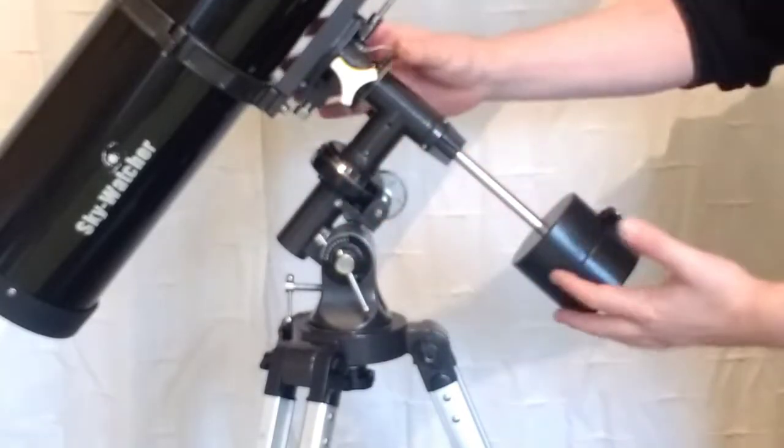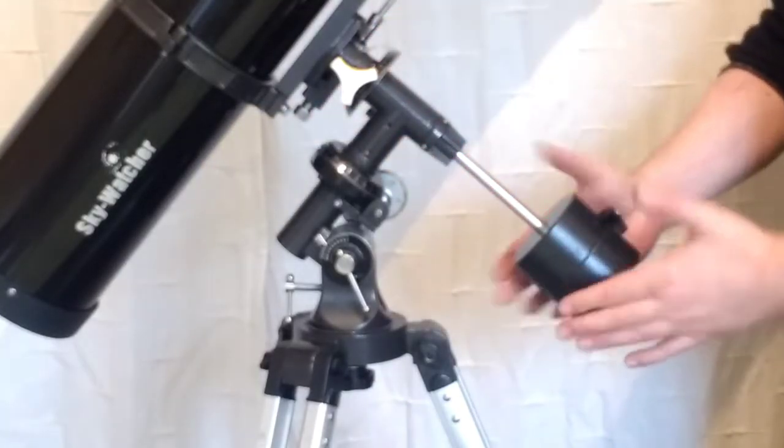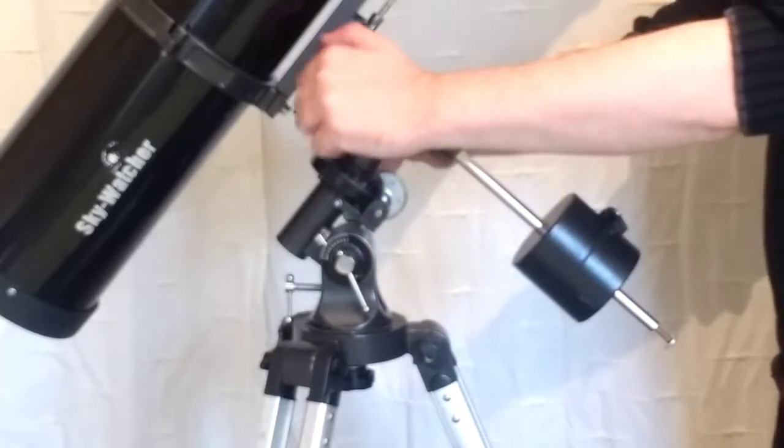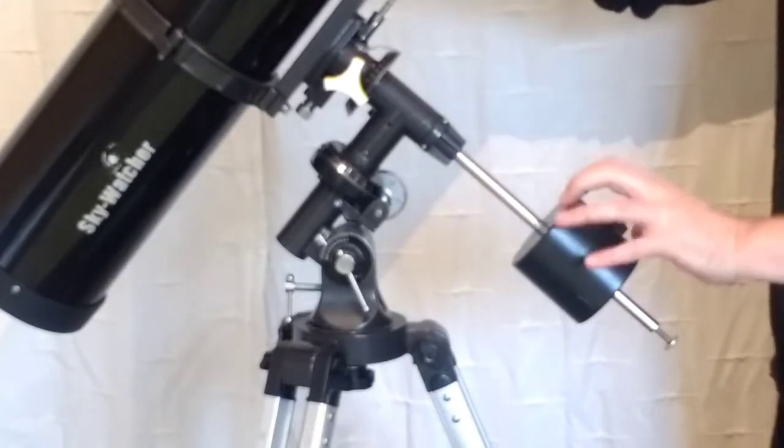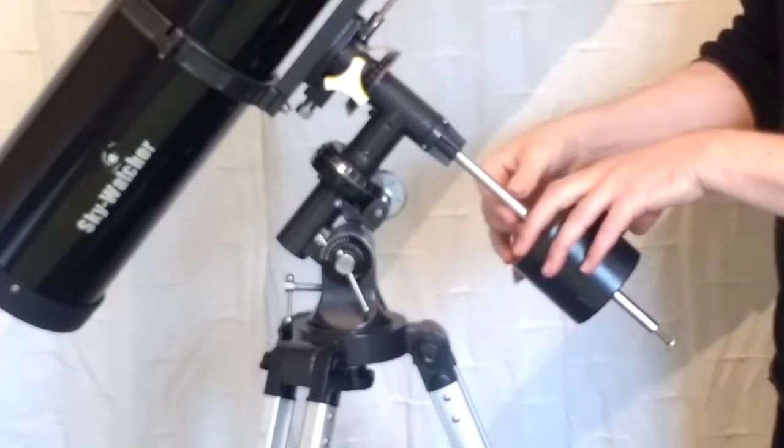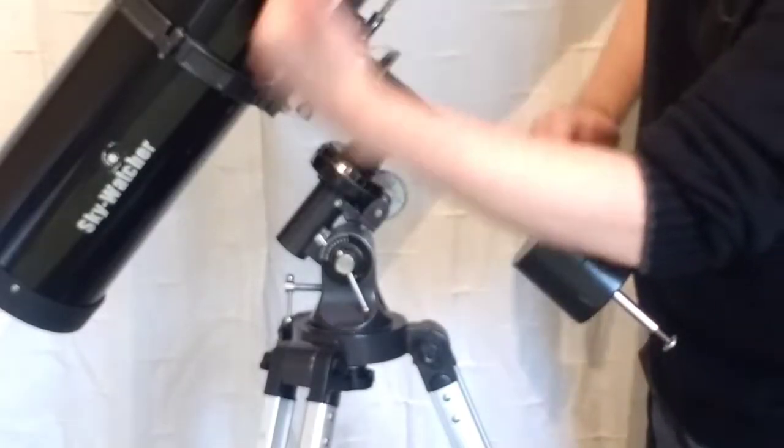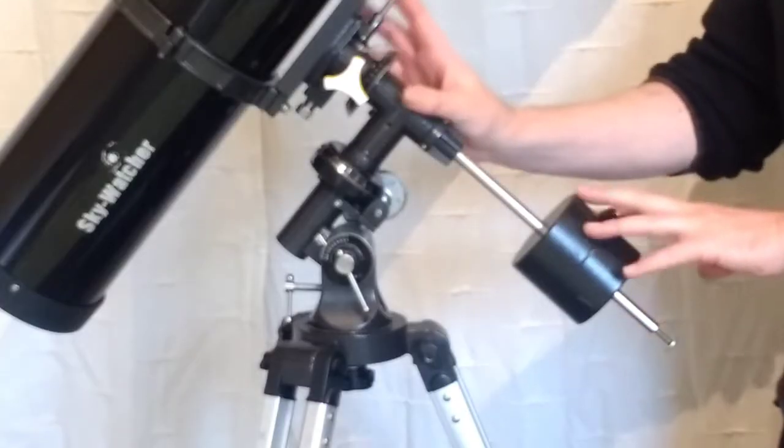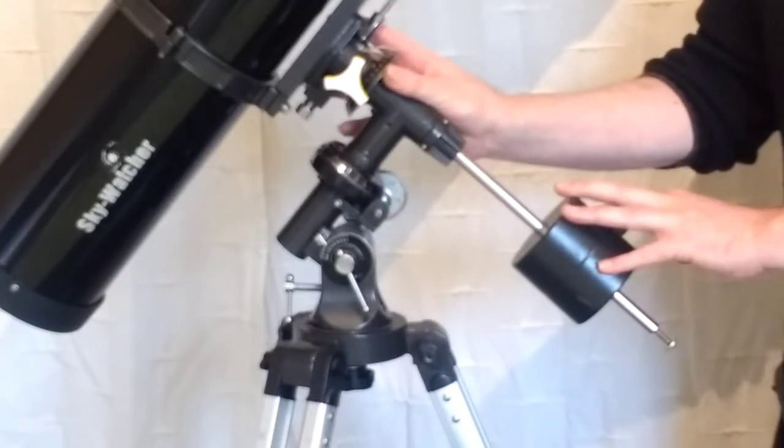So, the way to know you've got it right is look at your counterweight, and it should be at its lowest position, pointing down towards the floor. Make sure it's in its lowest position, pointing towards the floor, and it'll form like a T-shape that runs with your telescope tube. Now you know you're in the right position. If you've got this far, there's not a lot left to do, trust me.